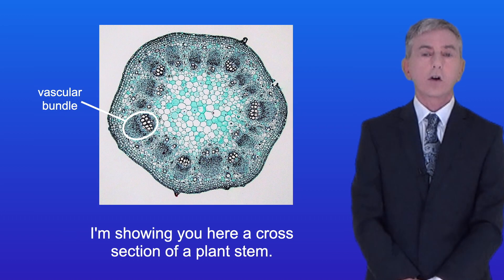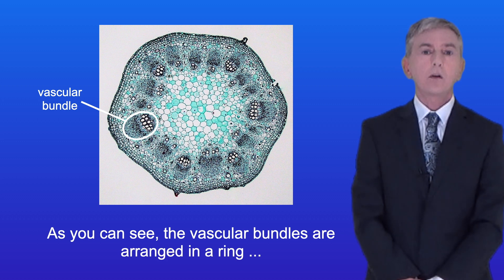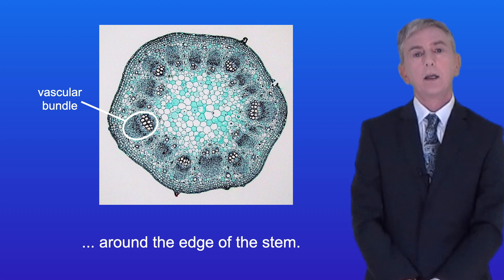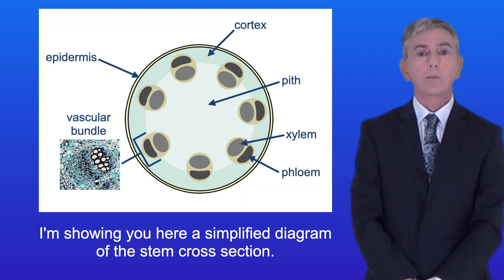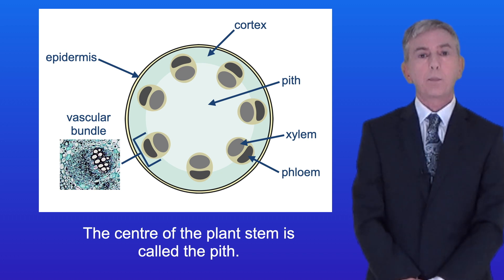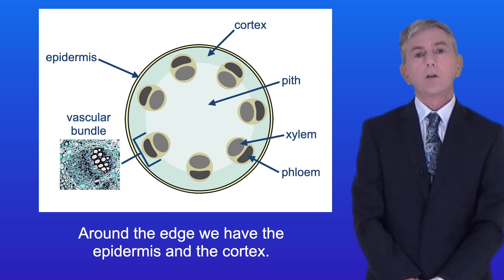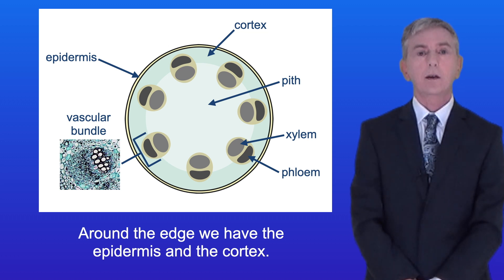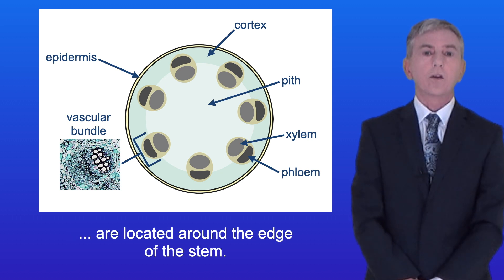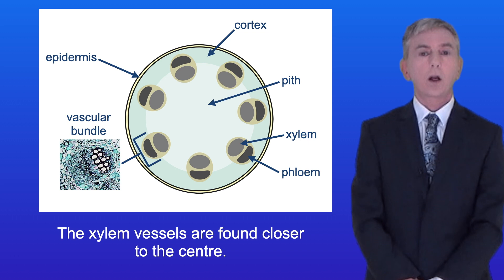Here is a cross section of a plant's stem. As you can see, the vascular bundles are arranged in a ring around the edge of the stem. In this simplified diagram of the stem cross section, the centre of the plant's stem is called the pith and this consists of parenchyma cells. Around the edge we have the epidermis and the cortex. Within the vascular bundles, the phloem vessels are located around the edge of the stem and the xylem vessels are found closer to the centre.